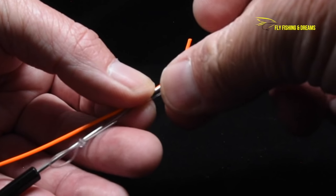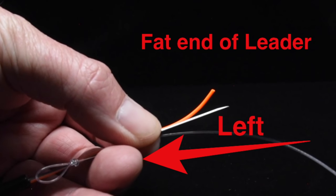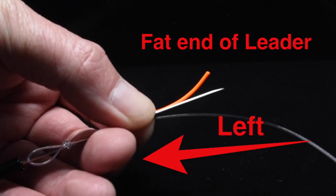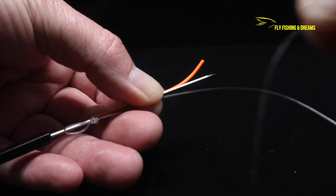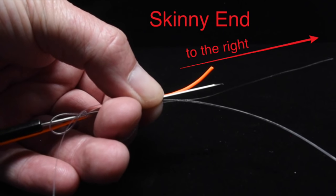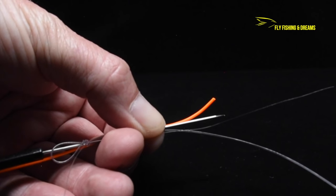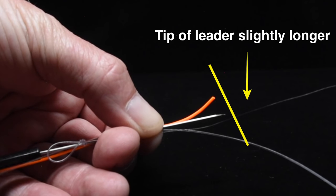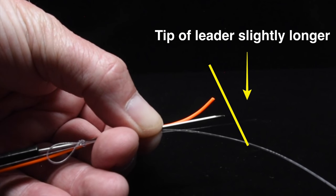Place the butt section of the leader next to the fly line with the fattest end of the leader facing toward the left. Now place the skinny end of the leader in your left hand facing to the right. Align the skinny end of the leader to be just a bit longer than everything else.